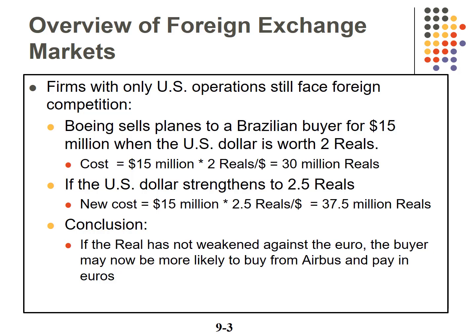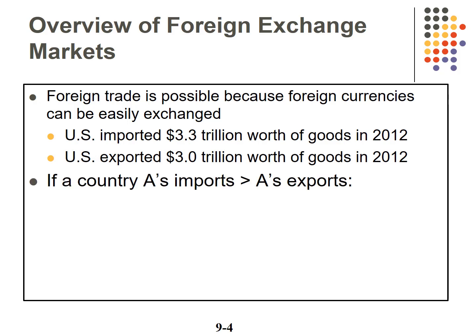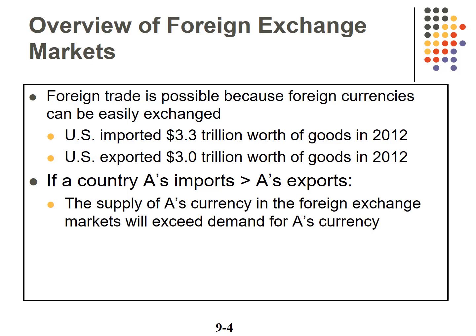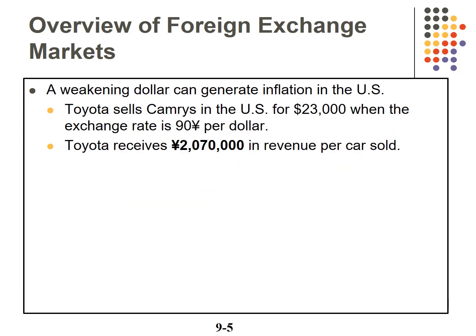Bottom line: even 100% US firms need to understand and be aware of moves in the foreign exchange markets. Foreign trade is facilitated because it's so easy to convert currencies. Looking at 2012 numbers, the US imported 3.3 trillion and exported 3 trillion. When country A's imports exceed their exports, the supply of A's currency will exceed demand in the foreign exchange market. All else equal, the value of A's currency will fall.